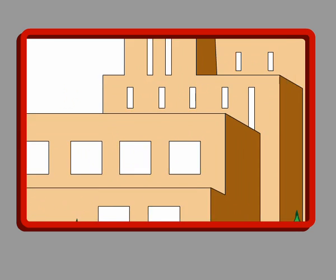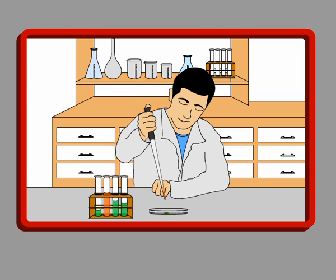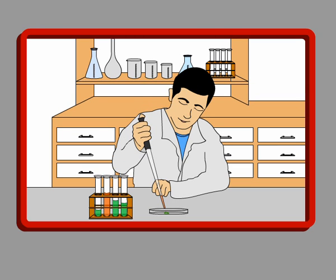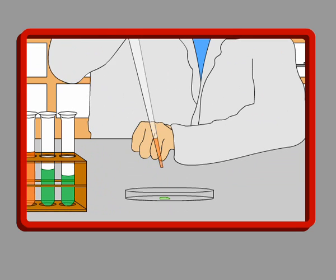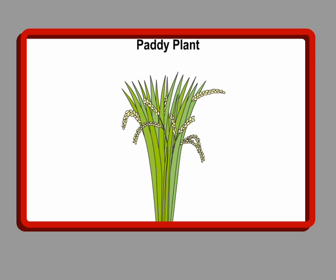Agribusiness corporations and research institutions have begun making new varieties of rice in laboratories — called genetically modified or genetically engineered rice, or GE rice. GE rice looks the same as native rice, but it is very different. To understand how GE rice is made, we first have to understand how genetic engineering is done.